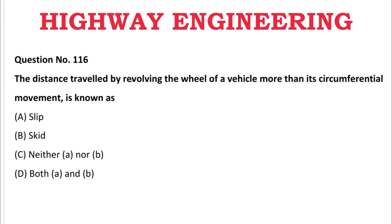Next question: The distance travelled by a revolving wheel of a vehicle more than its circumferential movement is known as — A: slip, B: skid, C: neither A nor B, D: both A and B. The correct answer is B, skid.